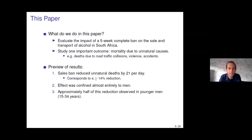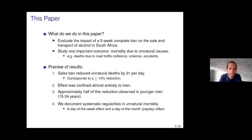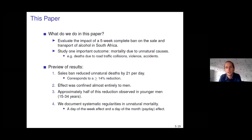We will also show that this effect was confined almost entirely to men — we observed no impact of the alcohol sales ban on the unnatural mortality of women. Approximately half of this reduction was observed in younger men, males aged 15 to 34 years. In addition, we document several interesting systematic regularities in unnatural mortality using data from 2017 to 2019: a very strong day of the week effect and a very strong day of the month effect, with far higher unnatural mortality on weekends and towards the end and beginning of the month — possibly due to a payday effect.